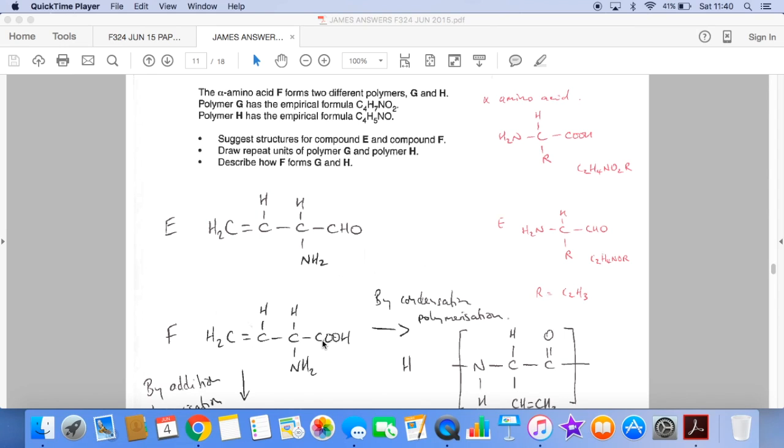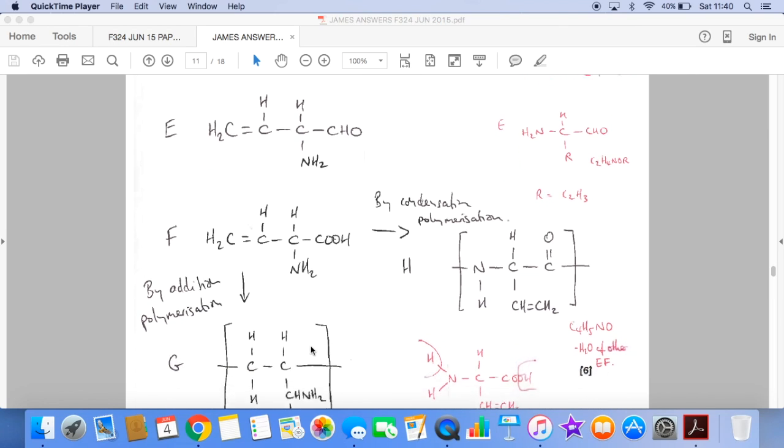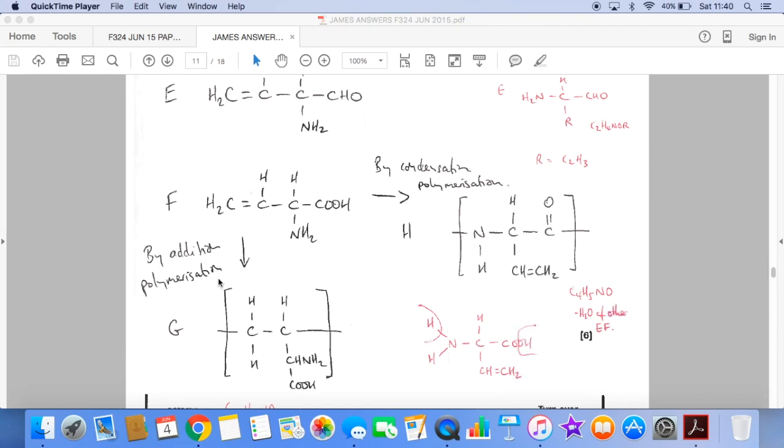So that's four carbons, seven hydrogens, and two oxygens, and obviously that nitrogen as well. So you can see that polymer G has exactly the same empirical formula as F, the starting material. And so therefore G must have been formed by addition polymerization. So that means that this carbon carbon double bond has opened up and we've basically added them all together that way. So there's no loss in atoms and that keeps the empirical formula the same. So it looks like that.